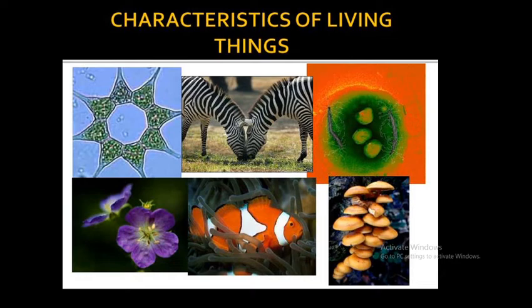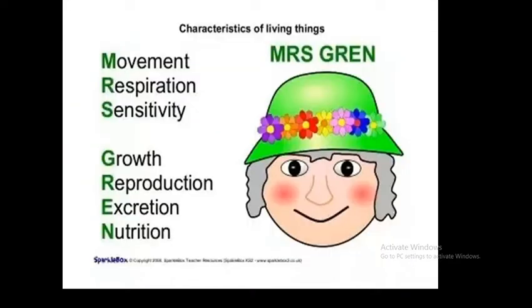Let's start now to know each characteristic in detail. So this is MRS GREN — the seven characteristics of living organisms: movement, respiration, sensitivity, growth, reproduction, excretion, nutrition.